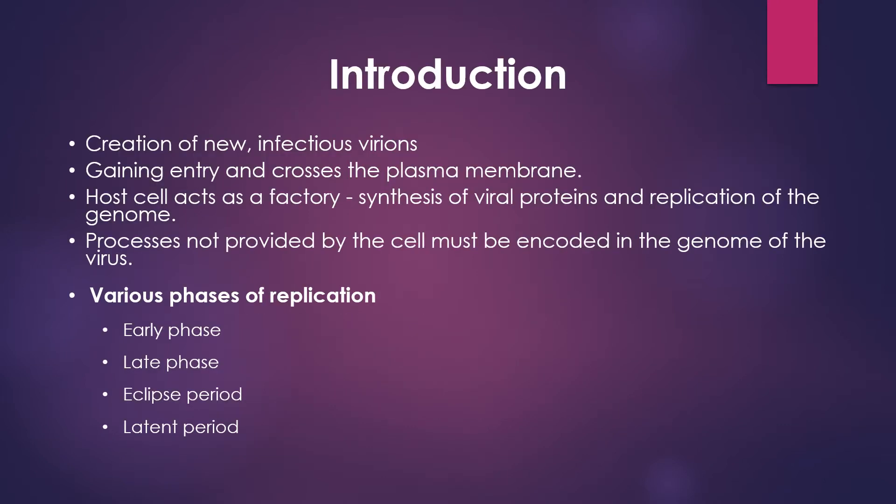A virus must undergo the process of replication to create new infectious virions that are able to infect other cells of the body or subsequent host. After gaining entry into the body, a virus makes physical contact with the host and crosses the plasma membrane of a target cell. The host cell acts as a factory, providing the substrates, energy and machinery necessary for the synthesis of viral proteins and replication of the genome. Processes not provided by the cell must be encoded in the genome of the virus.